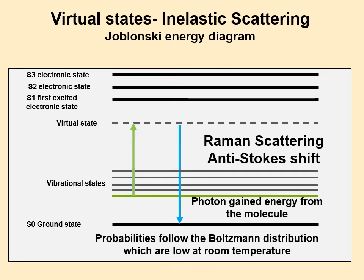This is less common because it requires the molecule to already be in an excited vibrational state, which typically they're not at room temperature. But if you have a very hot molecule it can be, so this technique is used for really hot things. This is called anti-Stokes — it's still Raman scattering — and the Boltzmann distribution is what determines that probability.